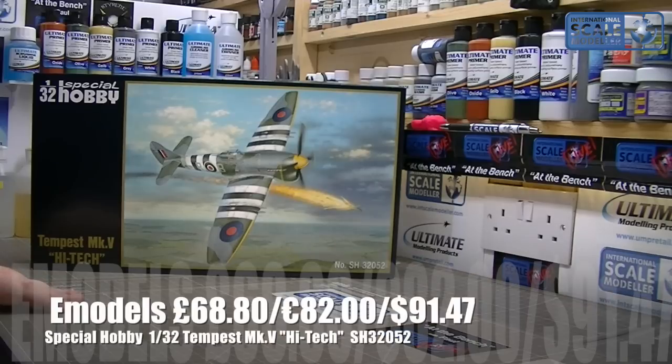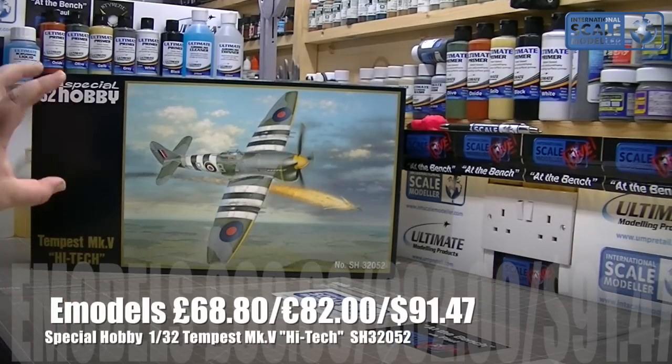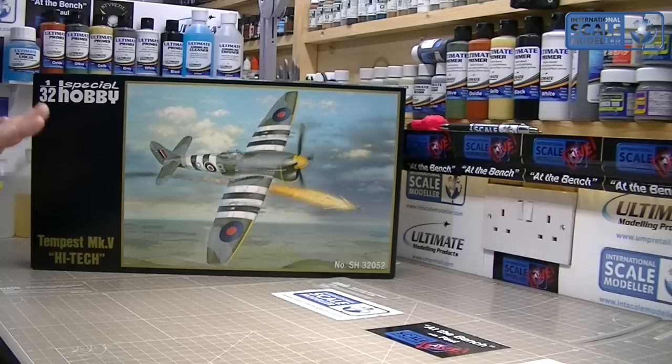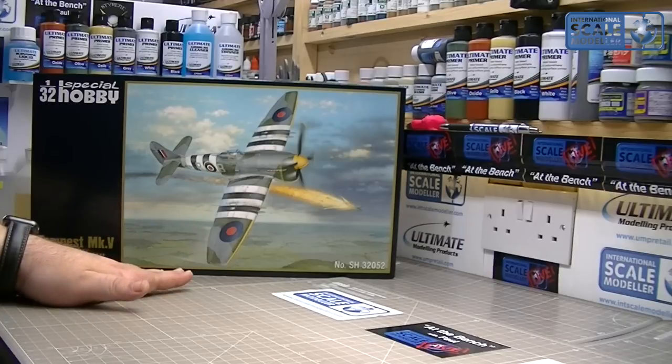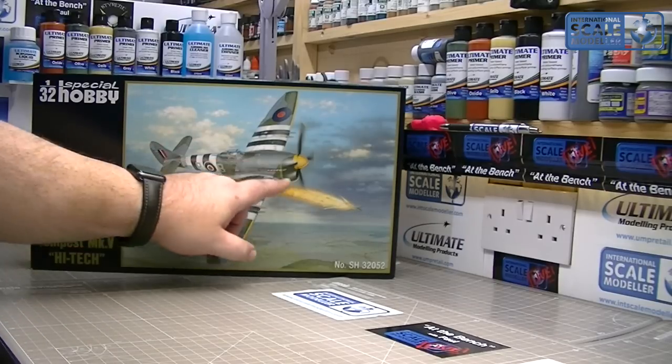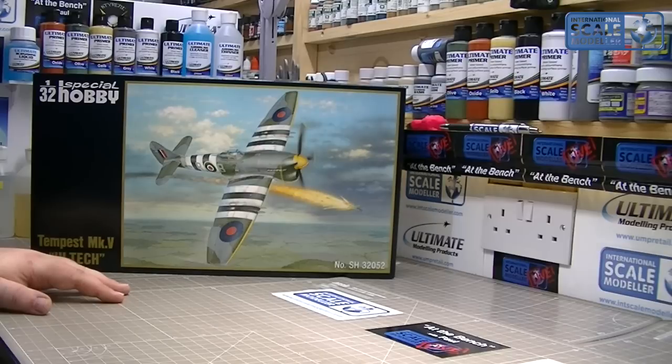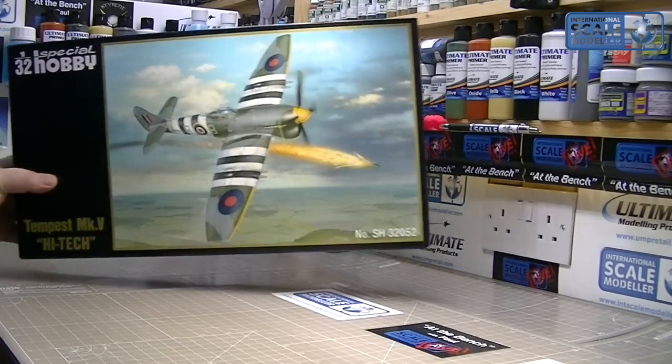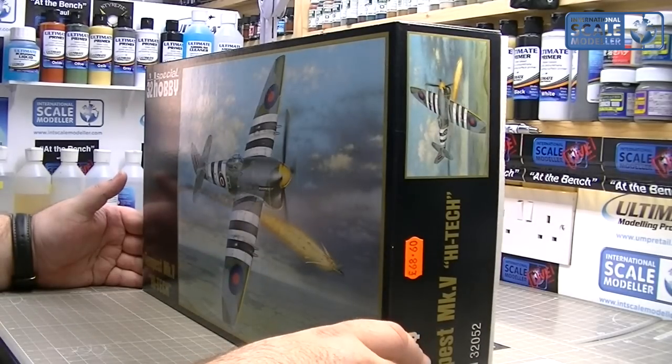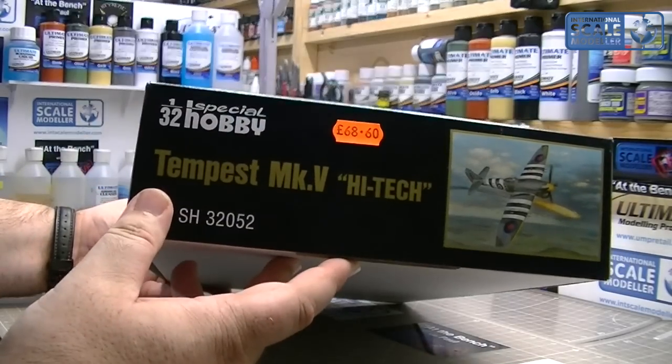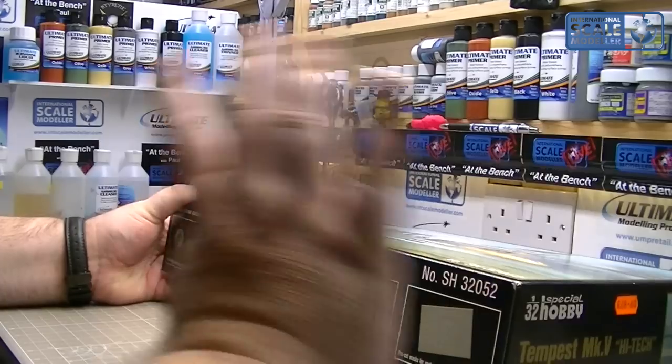It's kit number 32052. They also do another release without all the extras - that's about £44. But for me, that extra little bit of money with this is worth it. What you get is absolutely fantastic. Excellent box art, absolutely beautiful. Got a Tempest in a banking maneuver roll, it's just shot down a V1 flying bomb. The price I paid was £68.60.